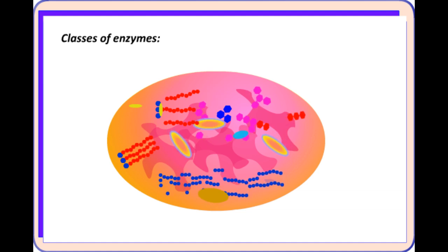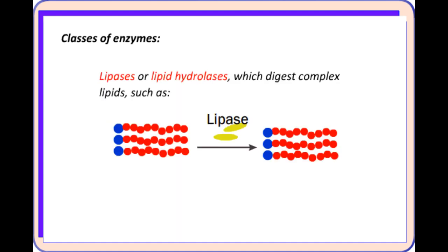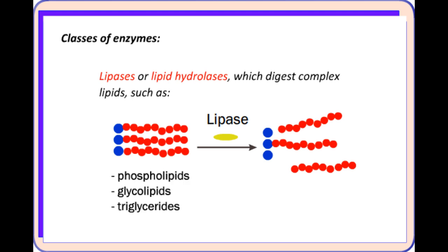The enzymes inside lysosomes can be divided into several classes. One, for example, are the lipases or lipid hydrolases which digest complex lipids such as phospholipids, glycolipids, triglycerides, cholesterol esters, and so on.